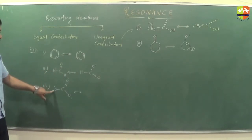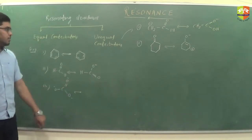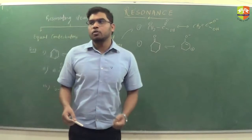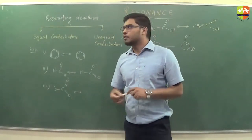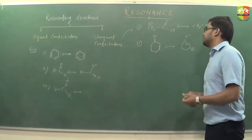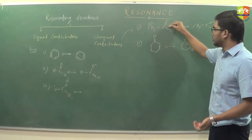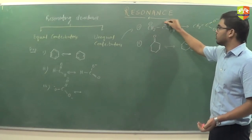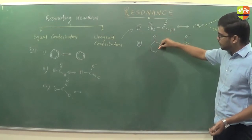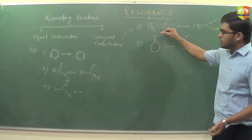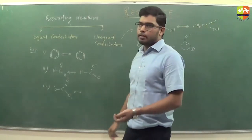For carbonate ion, it will be minus one-third, minus one-third, and minus one-third. That is the meaning of equal contributors — the pi electrons and lone pairs are equally distributed over the entire molecule. But in unequal contributors it is not the same; the pi electron is distributed only from one part to another, not uniformly, so the distribution is not uniform.